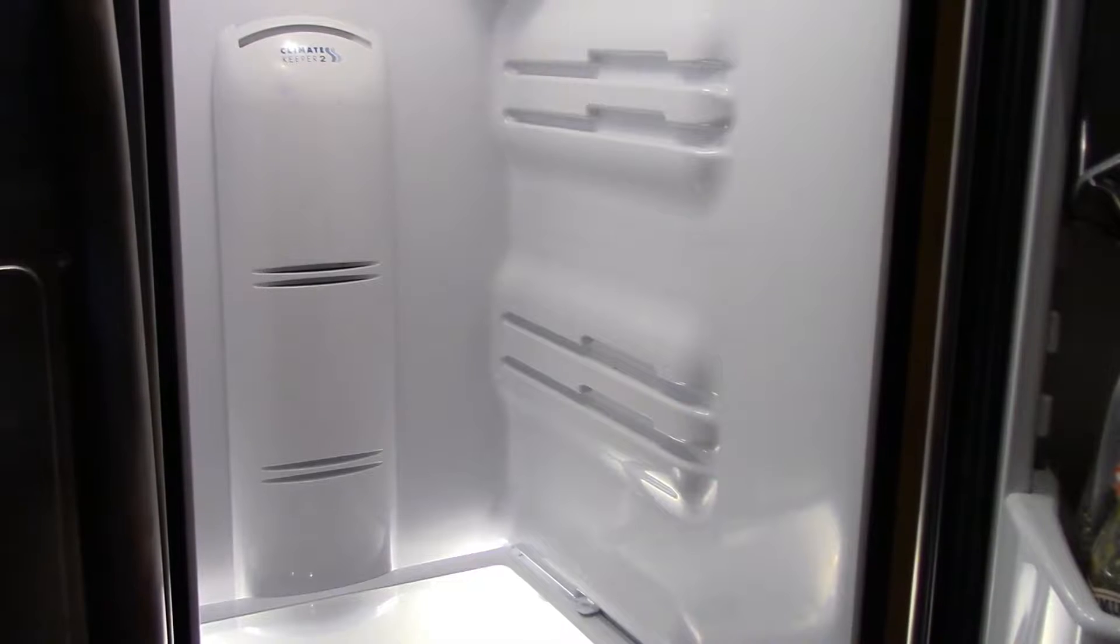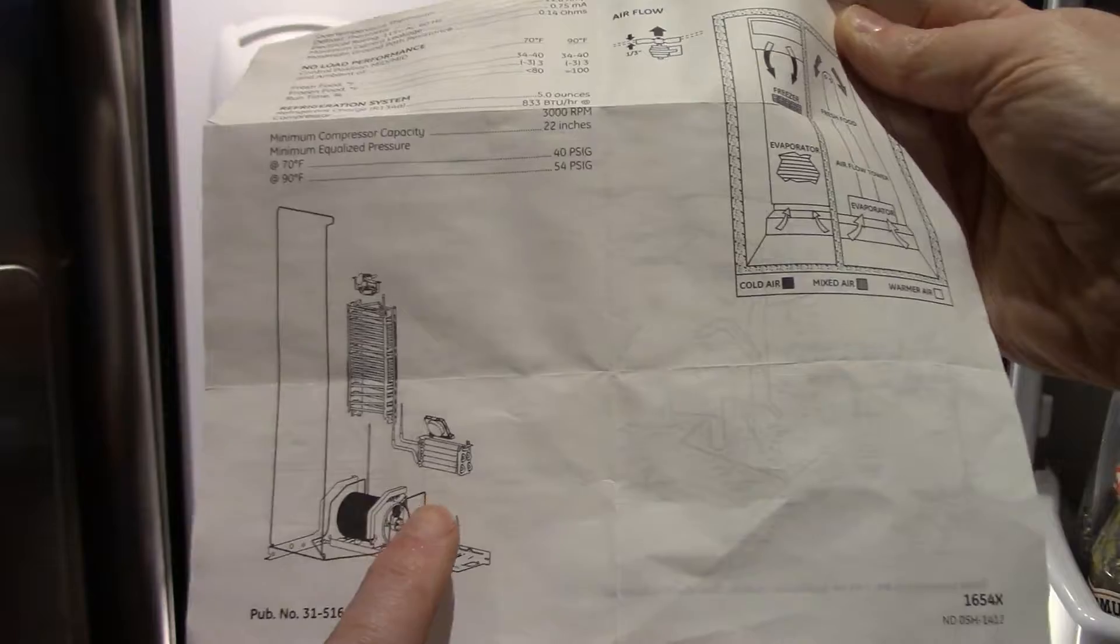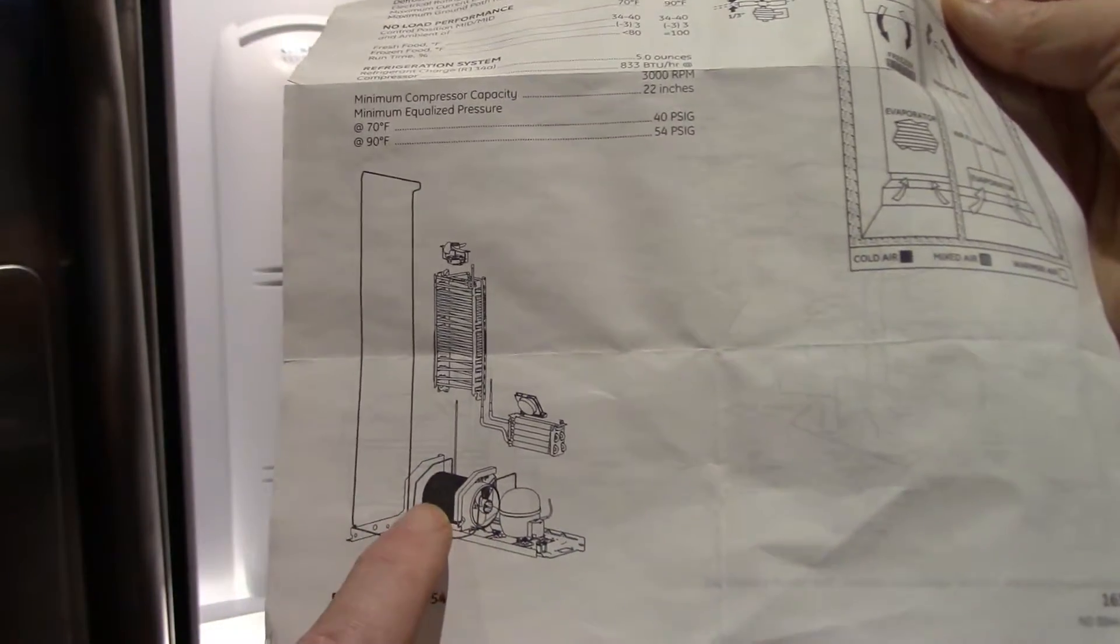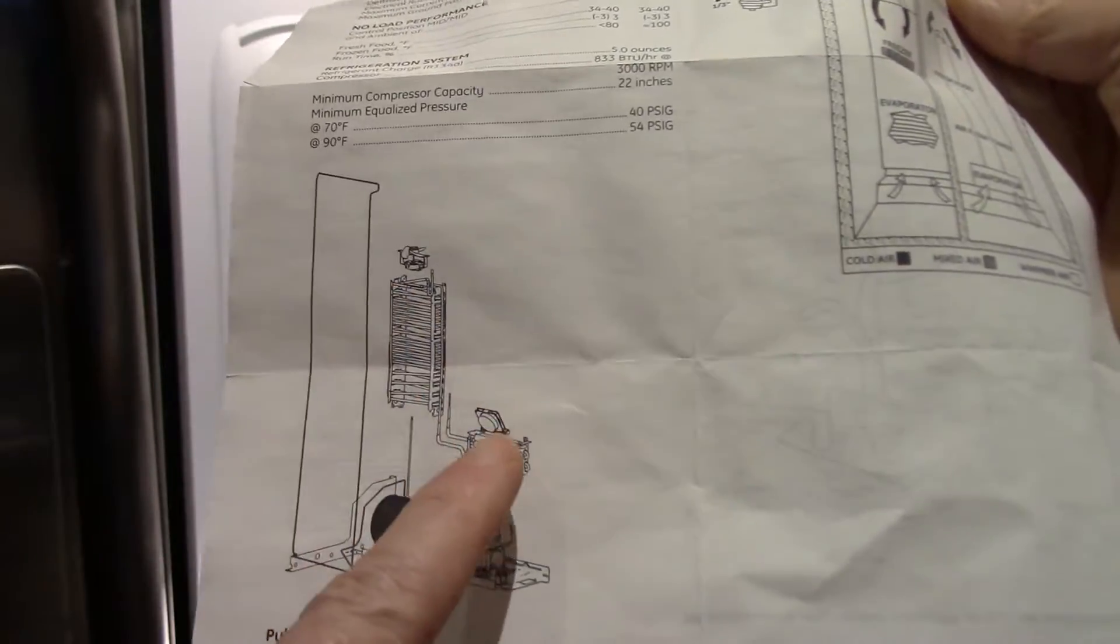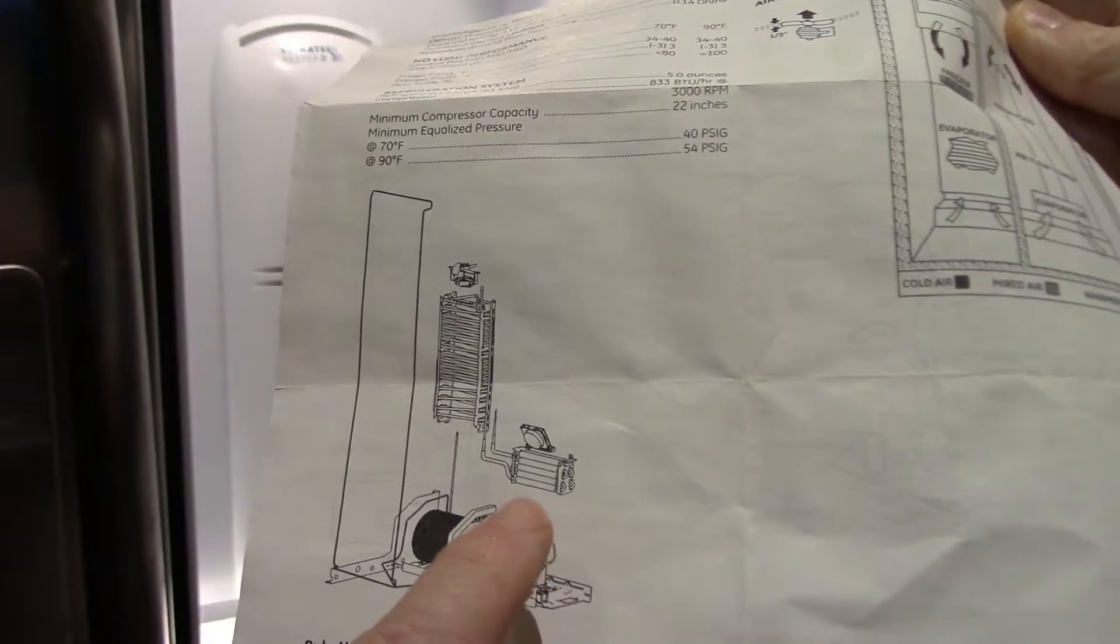This is one of these dual evaporator refrigerators. A lot of them are like this now. You've got one compressor and you've got the condenser coil and a squirrel cage. You've got a fan blowing through it and then you've got two evaporators, one for the freezer section and a smaller one for the refrigerator section.